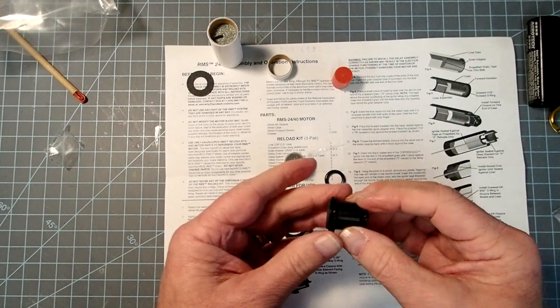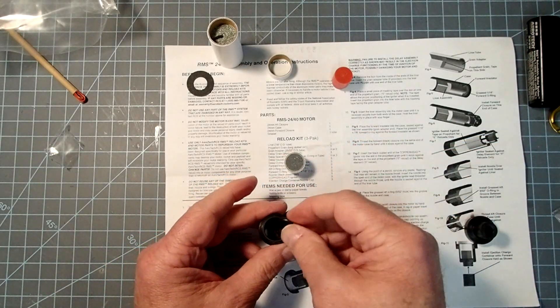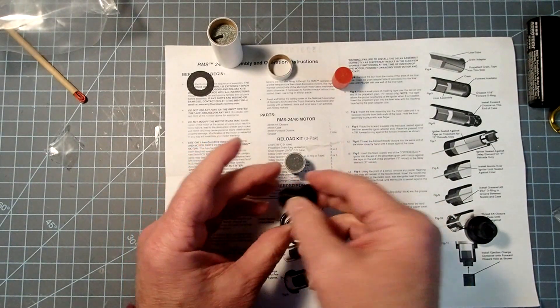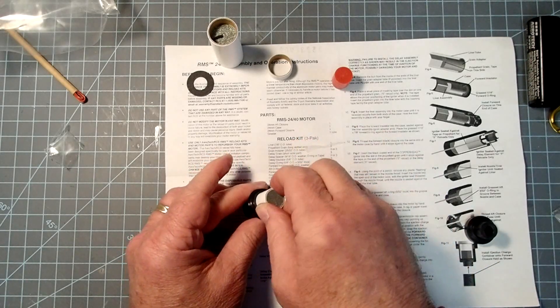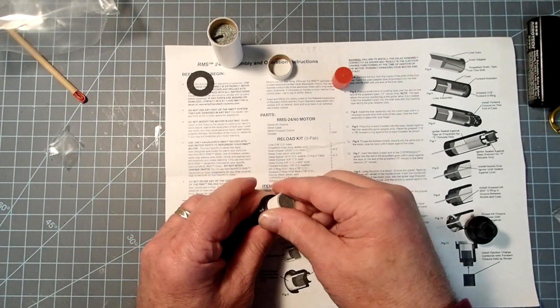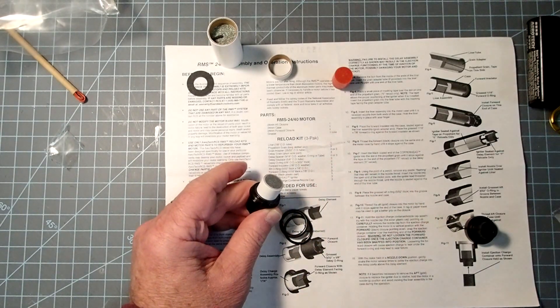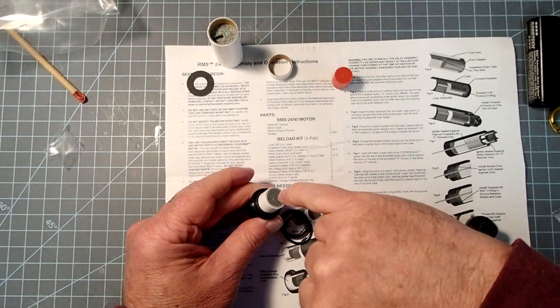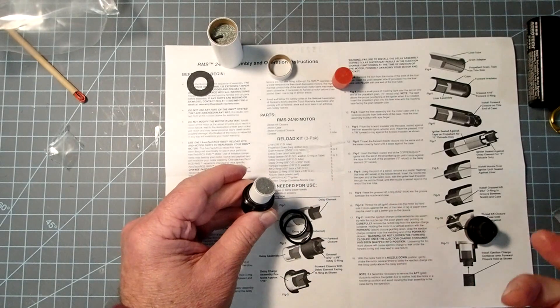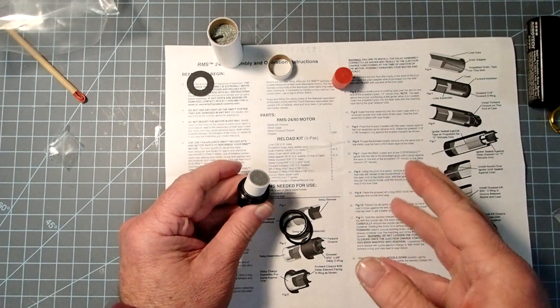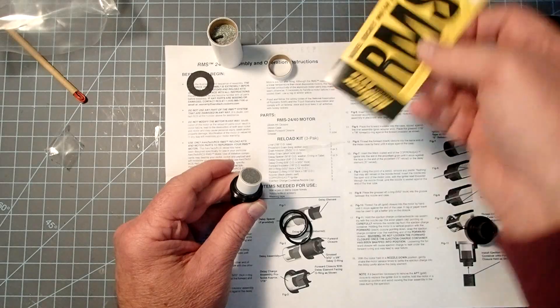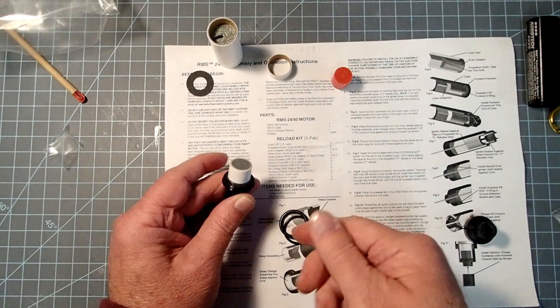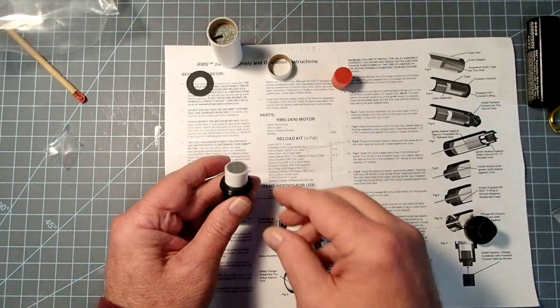Now we're going to take the forward closure here. We're going to put the smallest O-ring down all the way up against the forward wall here, and then we're going to add our delay grain. If you need to change this, Aerotech makes a delay boring tool that will allow the removal of some of the delay grain if you need a shorter delay than what's on here. It turns out that the rated delay on this, which is seven seconds, is exactly what I need for the rocket that I'm flying, so I'm not going to do anything to that.